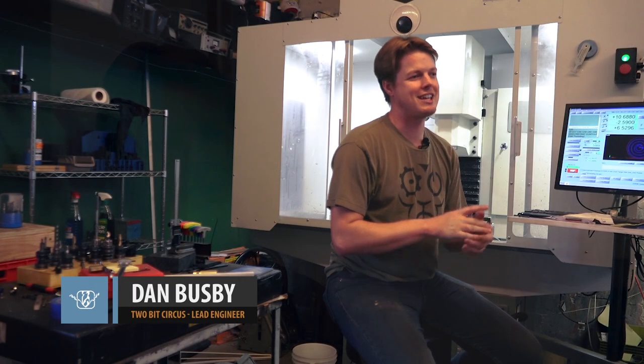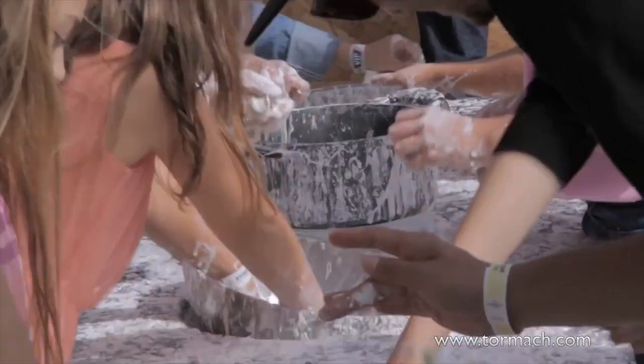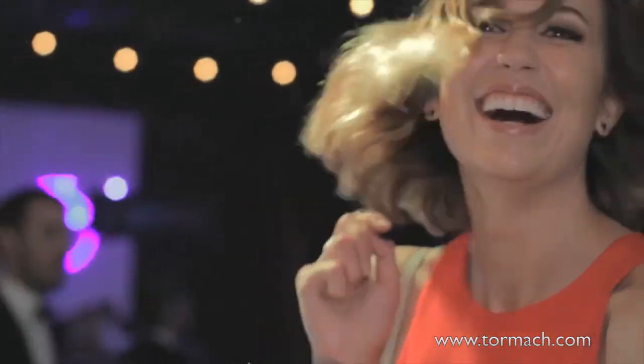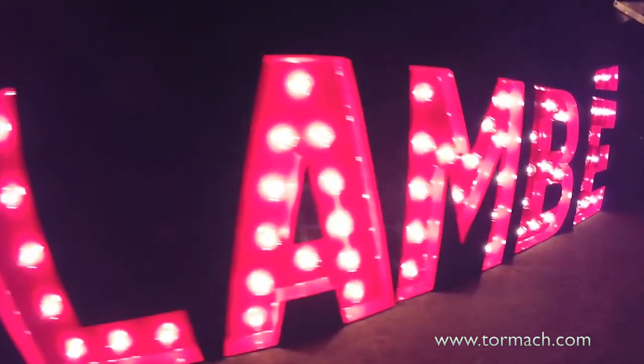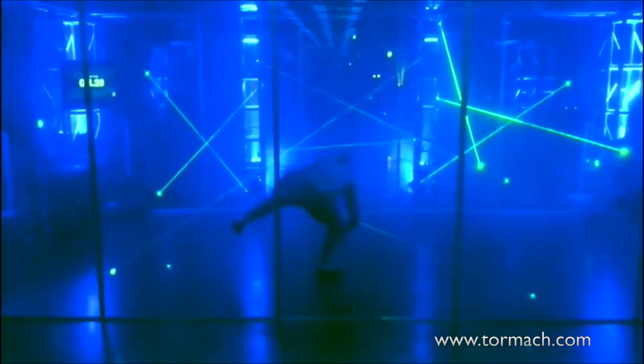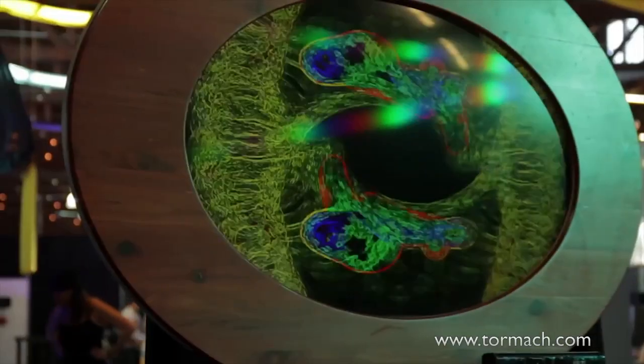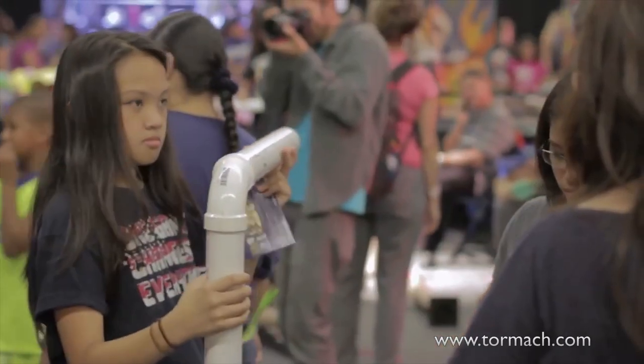2-Bit Circus got started by doing these small events. We would rent out these games that we were making, literally making them in our backyard, and bringing them to events and helping corporate people have fun with each other. We learned a lot very quickly about how to make games that people enjoy, how to get people out of their element and thinking about new things. We used game mechanics, social dynamics, and computer technologies to make fun entertainment for people at parties. It was a great gig.